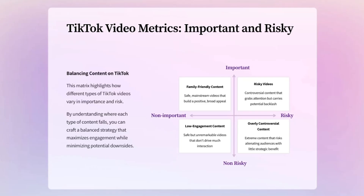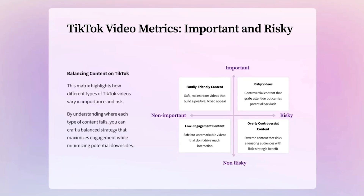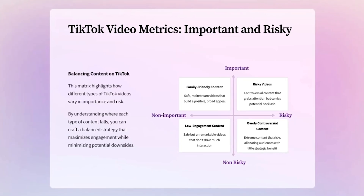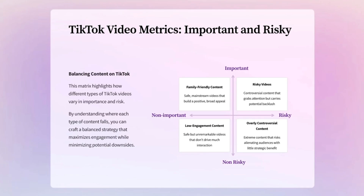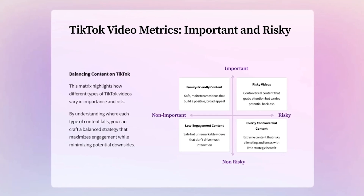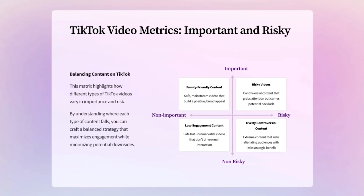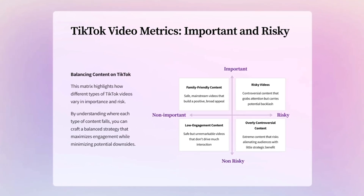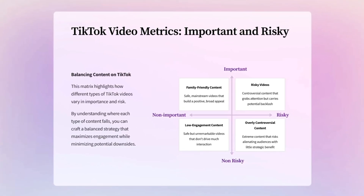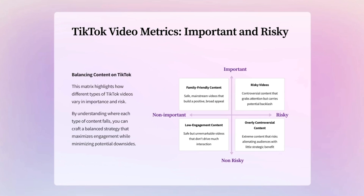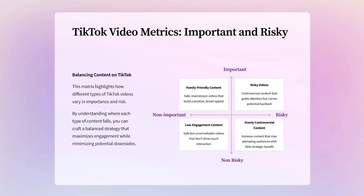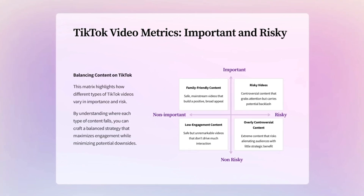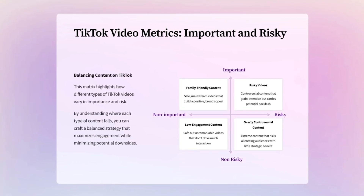2x2 Matrix: This diagram helps to categorize tasks into four quadrants. For example, you can divide it into Important, Risky, Non-Important, and Non-Risky. It helps entrepreneurs identify where to focus efforts and can be used to great effect for product development prioritization too.